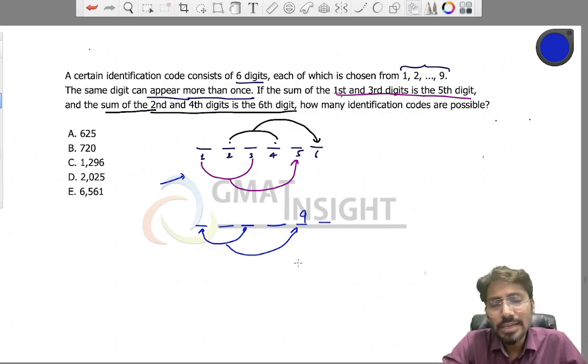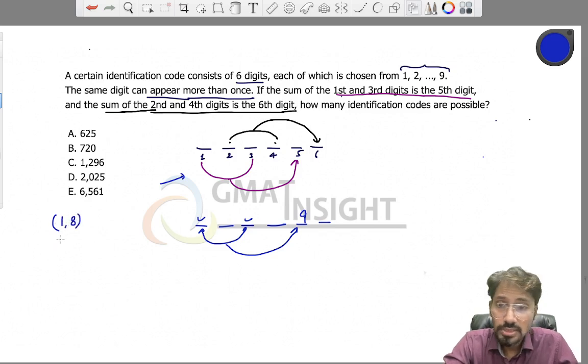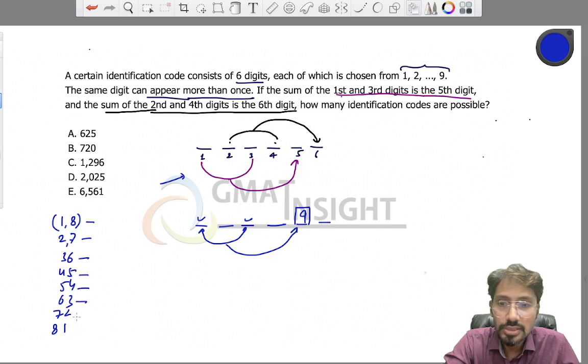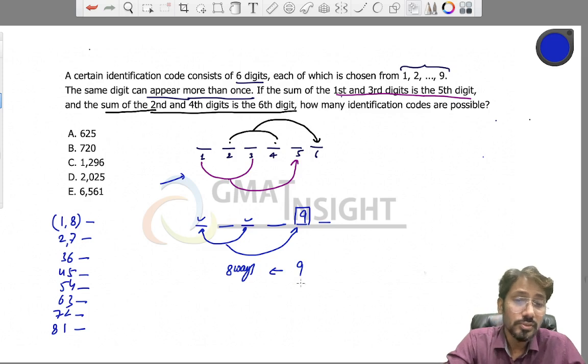Let's assume if I fill it by nine—how many choices do I have? If this place is nine, I can make either 1-8, or 2-7, or 3-6, or 4-5, 5-4, 6-3, 7-2, 8-1. So I have eight ways to fill the remaining two places if this place is filled with digit nine.